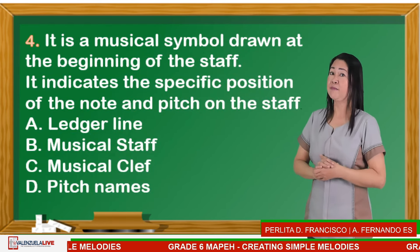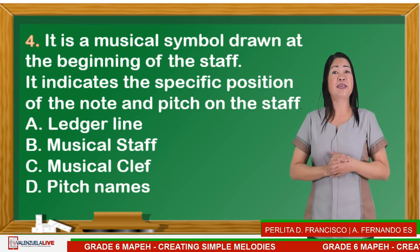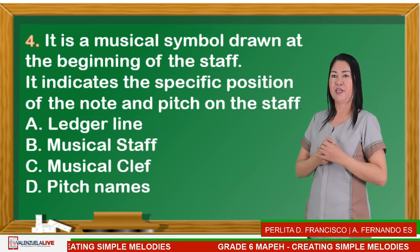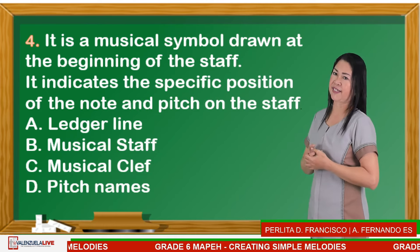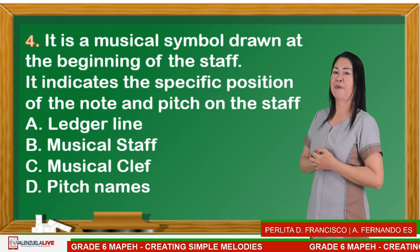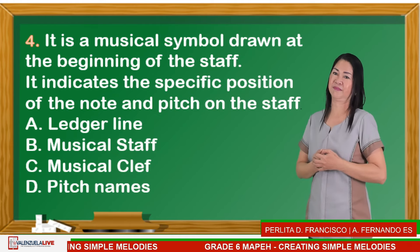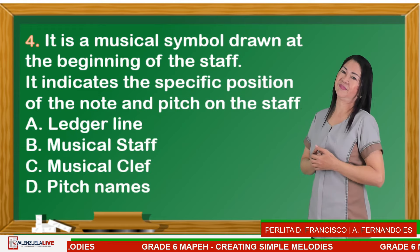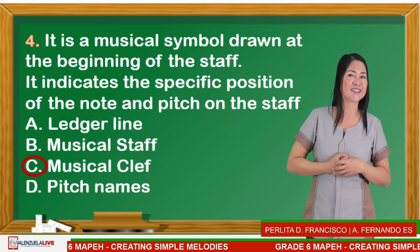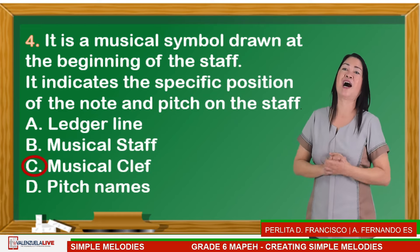Number four: It is a musical symbol drawn at the beginning of the staff. It indicates the specific position of the note and pitch on the staff. Is it A — ledger line, B — musical staff, C — musical clef, or D — pitch names? The correct answer is C — musical clef.